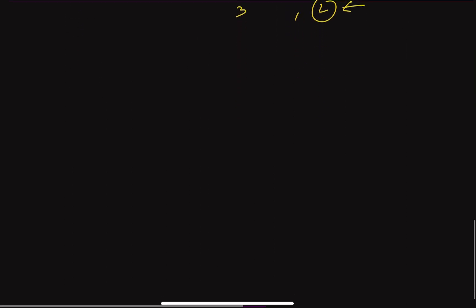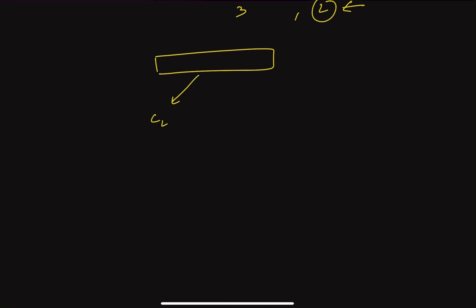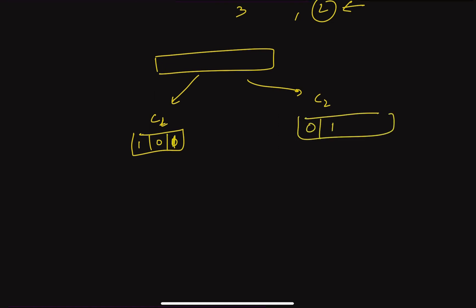So the algorithm is: you have two cases, c1 and c2. You iterate over each character and track what the correct character should be at each position for both possibilities. For possibility one starting with '0,' at even positions '0' should be there; for possibility two starting with '1,' at even positions '1' should be there. If there's a mismatch, increment the respective counter. Finally, return the minimum of c1 and c2. Thanks for watching — see you in the next video.